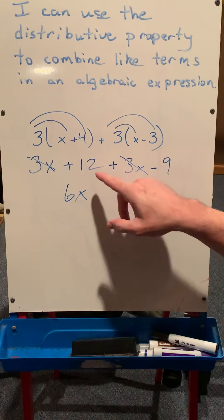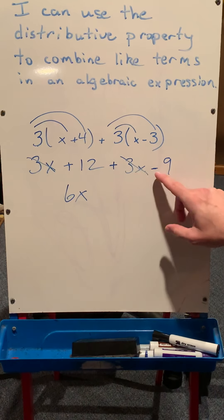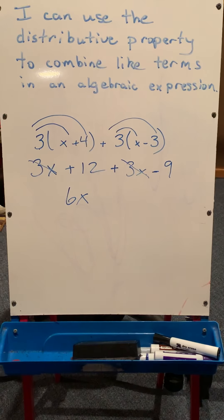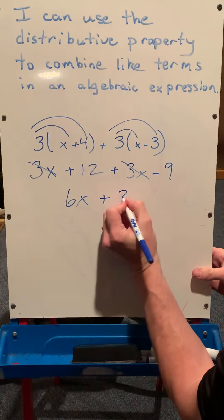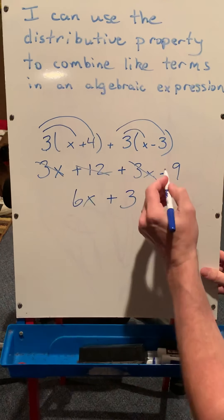Then we'll take our numbers. We have a positive 12, and we need to take away 9, so that leaves us with a positive 3 or 3. So we're going to add that 3 there when I've combined the positive 12, take away 9.